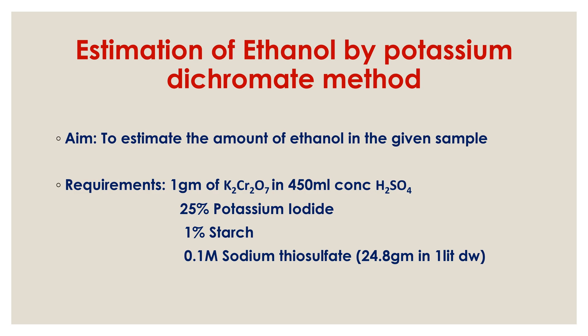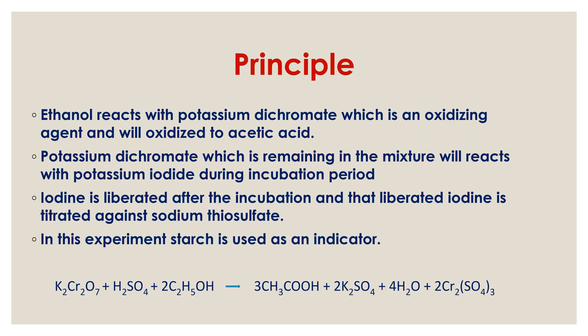The requirements are: 1 gram of potassium dichromate in 450 ml of concentrated H₂SO₄, then 25% potassium iodide, 1% starch, and 0.1 molar sodium thiosulphate. Now coming to the principle — what reaction is going on when we perform this experiment.